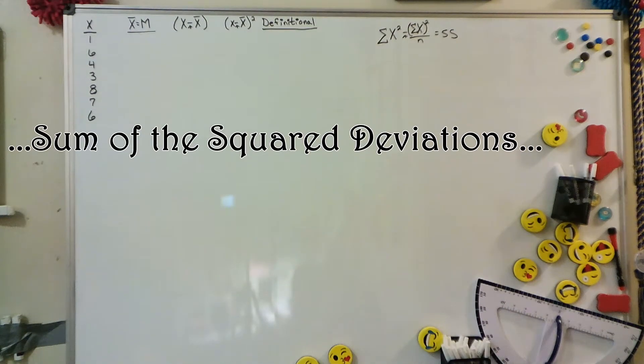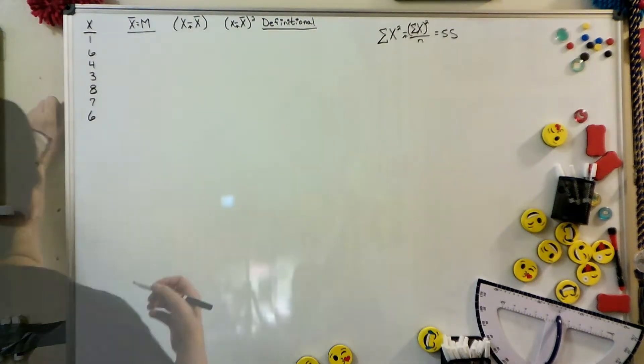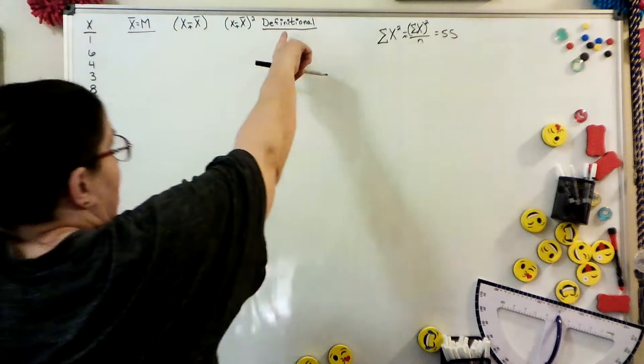Okay, we're dealing here with the SS, or the sum of the squared deviations. We're going to do the definitional formula first, then the computational formula.